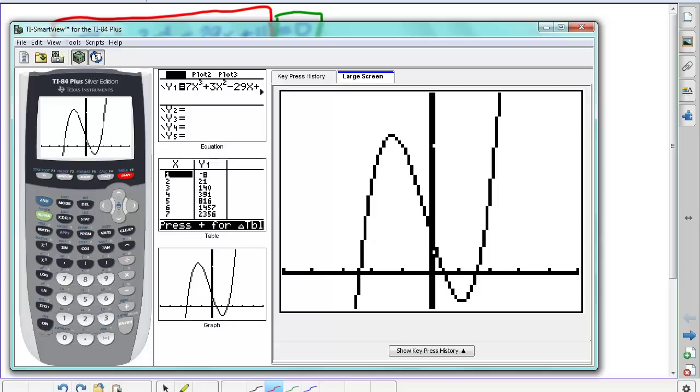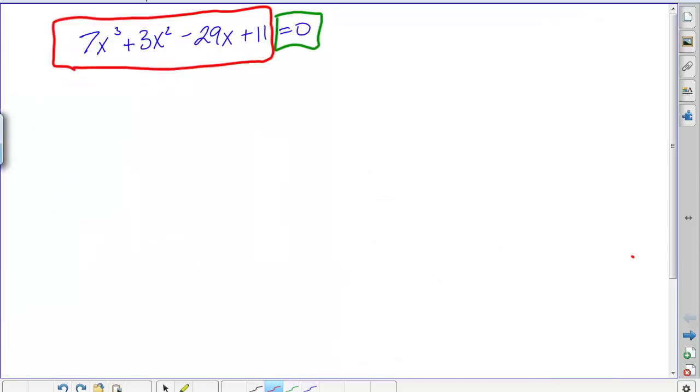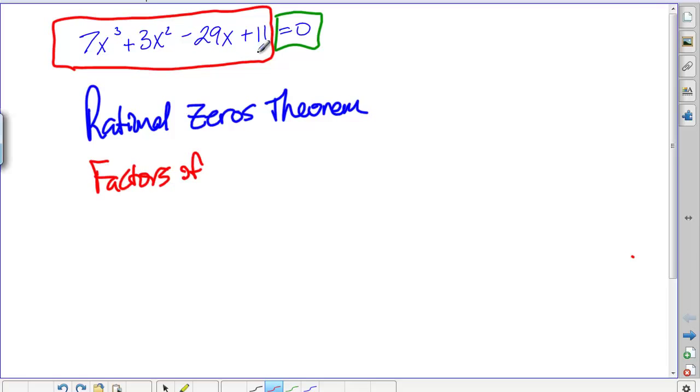Now the next thing we can look at is that rational zeros theorem, where we take factors of the constant term, which is 11, which you just get 1 and 11 for those, and then also the factors of the leading term, which are just 1 and 7, positive and negative for those.